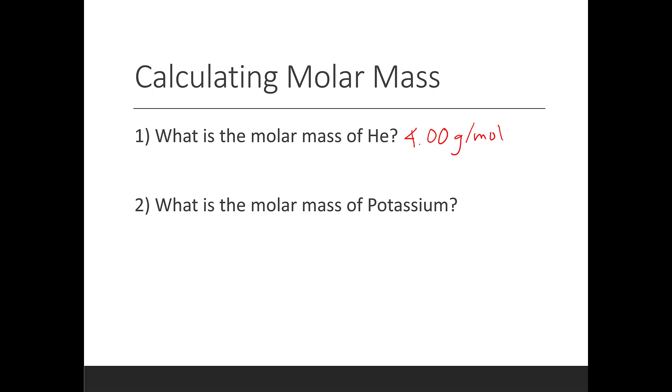Well, what is the molar mass of potassium? Again, we just need to look at the periodic table and we just need to write it down. 39.10 grams per mole. You'll notice that potassium has a much higher molar mass than helium. That's because potassium has 19 protons, a bunch of neutrons, around 20 neutrons, whereas helium only has two protons and two neutrons. So it's a totally different atom and that's why their masses are very different.